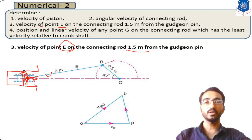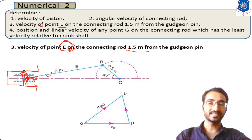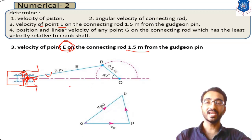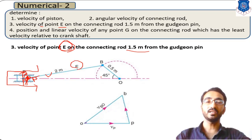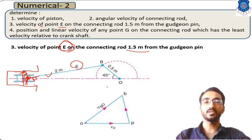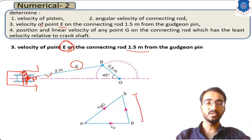Now you have to calculate the position of point E on the velocity diagram. From the configuration diagram you can see that point E belongs to the connecting rod. Similarly, in the velocity diagram, point E will belong to the line BP, which defines the velocity of the connecting rod.